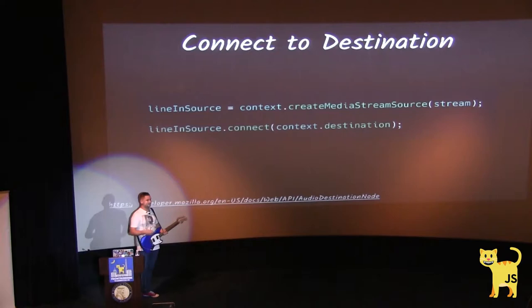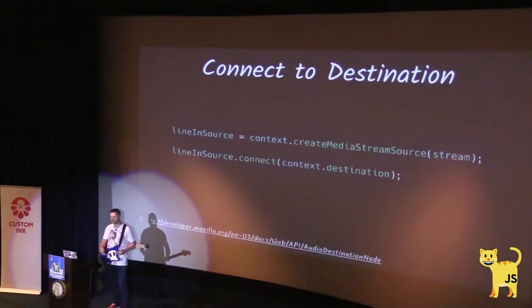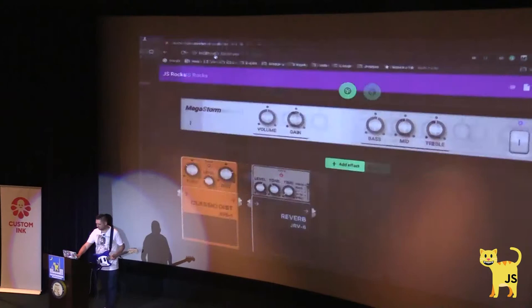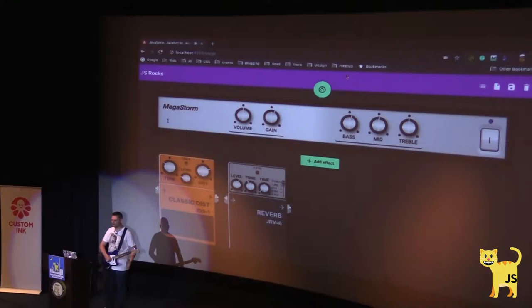After that, you need to connect your stream to some destination. The audio context has a default destination, which is usually your speakers or whatever you specify at the system level. You just call connect to destination and you get the clean sound. I have a simple connection button that wraps all the code and I get a clean sound from the guitar without any modifications.